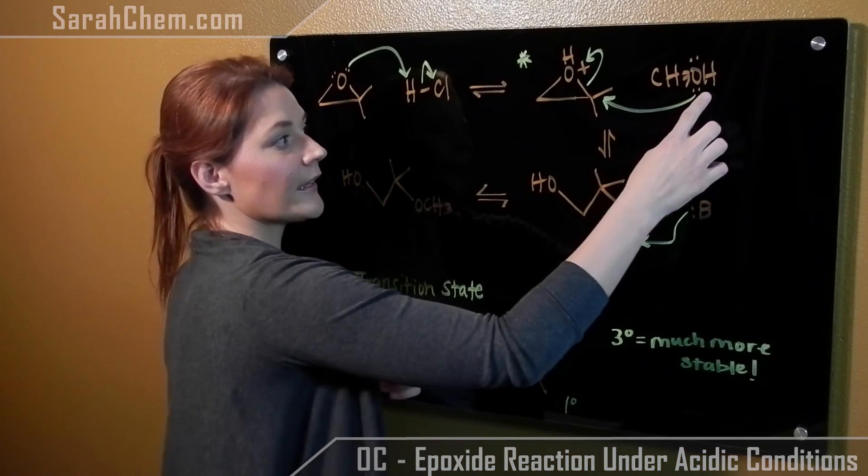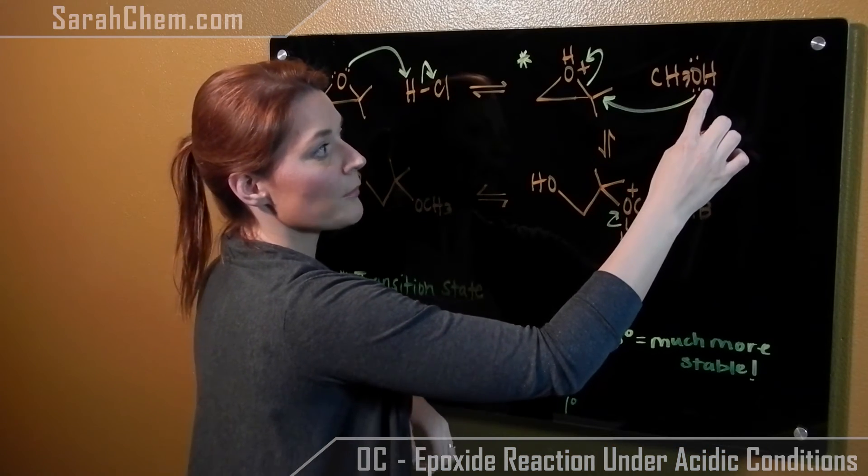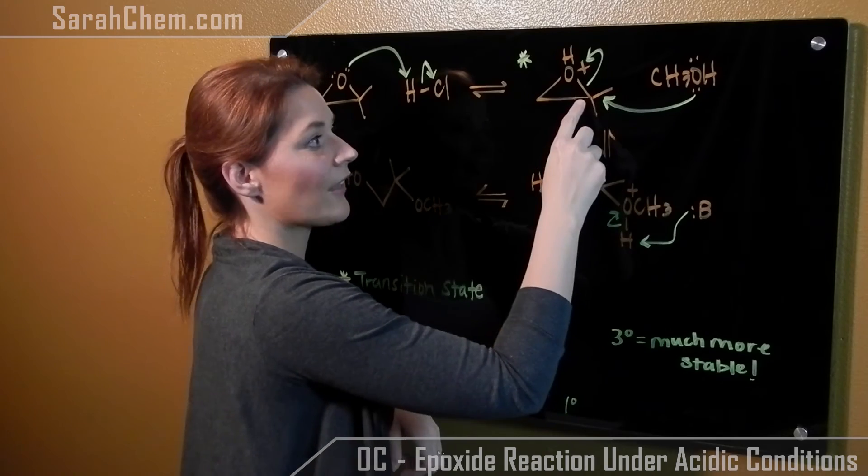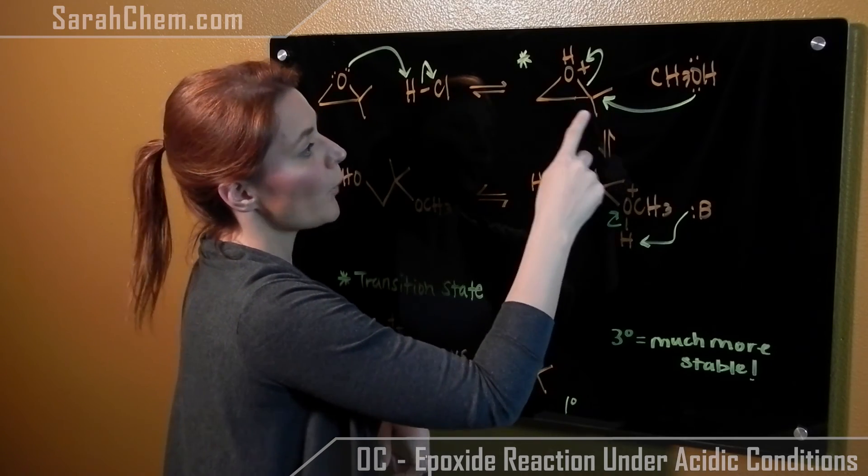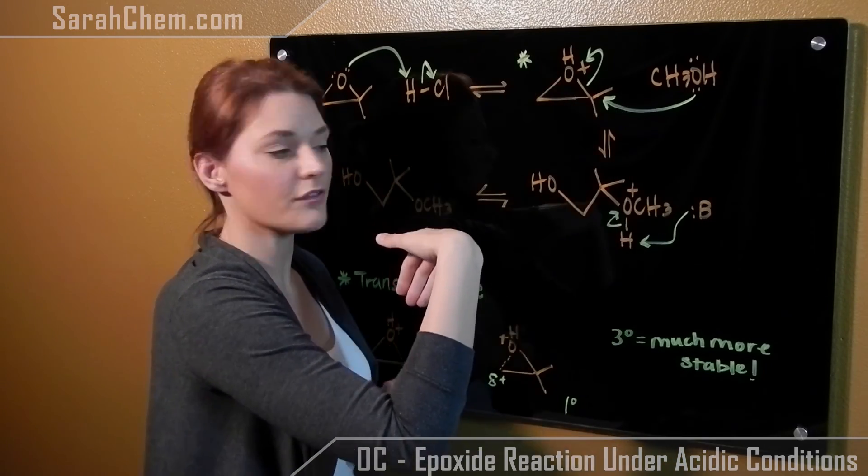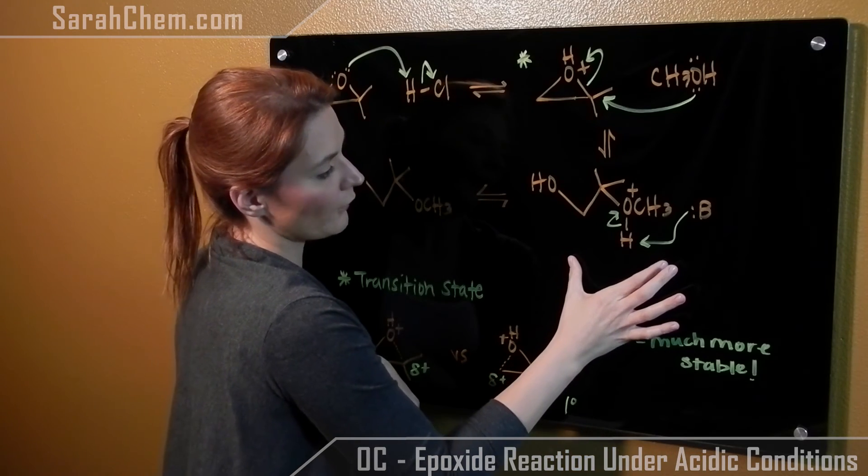So if we look back at the mechanism, then that's going to explain why the methanol is going to preferentially attack this carbon right here. When it attacks here, it's going to cause this bond to break the rest of the way, and we're going to get this compound out.